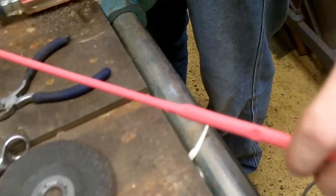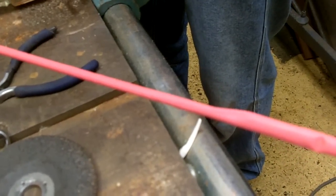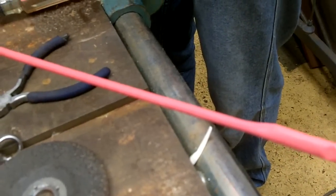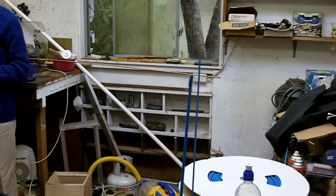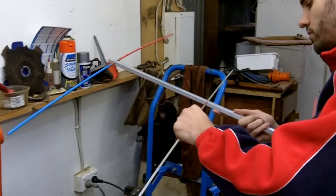It's time to put the heat shrink on. The heat shrink only goes on to the braid section. It doesn't go over the top of the copper tube. At the ends of the heat shrink is hot melt glue to keep a bit of the moisture out.